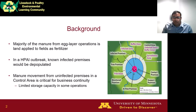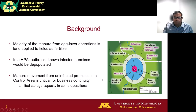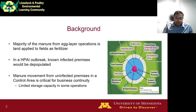However, there might be premises in the control area that are uninfected, and movement of products and byproducts from those premises is critical for continuity of business. The figure on the right shows an example control area. Particularly for some egg-layer operations using manure belt systems, they might have limited storage capacity on site, and therefore movement of manure is critical to continue operations.